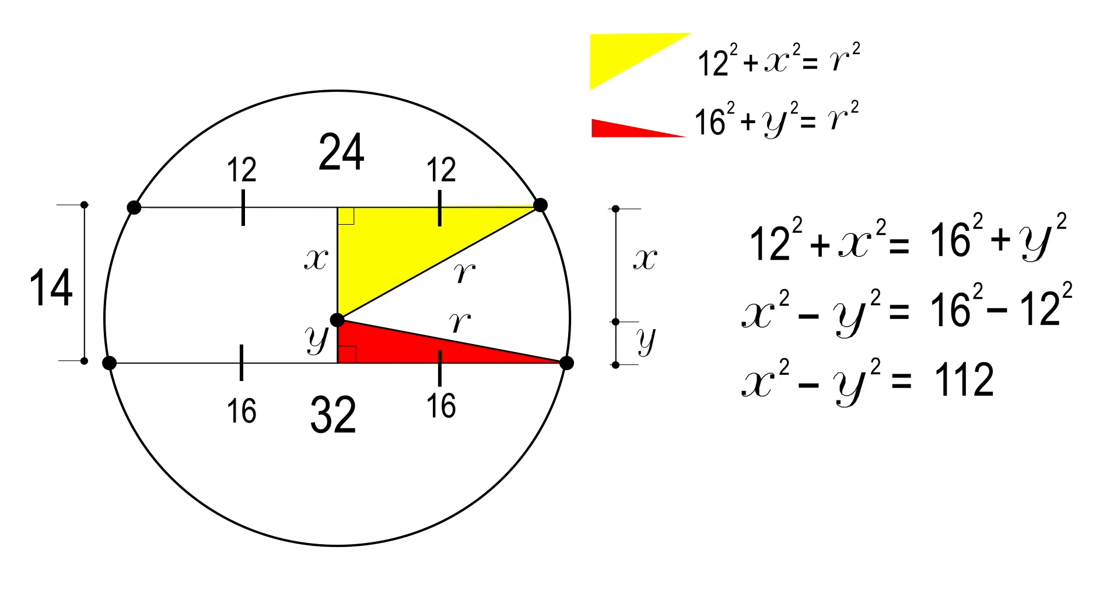As we know that x plus y is 14, we can substitute this into the equation to find the value of x minus y which will be 8. With the help of these two x and y equations, we find the values of x and y as shown.